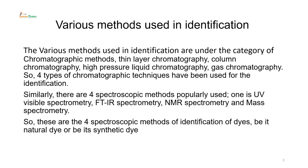Various methods are used in identification of natural dyes. Under chromatographic methods, these include thin layer chromatography, column chromatography, high pressure liquid chromatography, and gas chromatography — four chromatographic techniques. Similarly, four major spectroscopic methods are popularly used: UV visible spectrometry, FTIR spectrometry, NMR spectrometry, and mass spectrometry. These are used for both natural and synthetic dye identification.